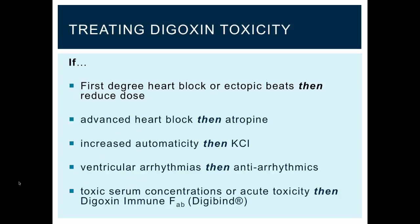Because digoxin toxicity is a significant issue and can lead to fatal arrhythmias, it's important to understand its treatment. If there is first-degree heart block or ectopic beats, reducing the dose will be sufficient. If there is advanced heart block, atropine can be used. If automaticity is increased, calcium chloride can be administered. If ventricular arrhythmias arise, antiarrhythmics can be employed. Finally, if there are toxic serum concentrations or acute toxicity, digoxin Fab antibody fragments can be used — these literally bind up and neutralize the excessive levels of digoxin found in the serum.